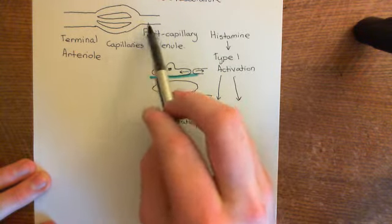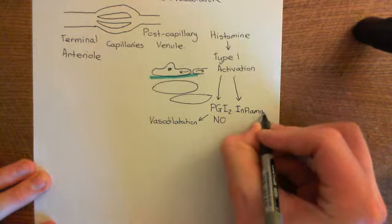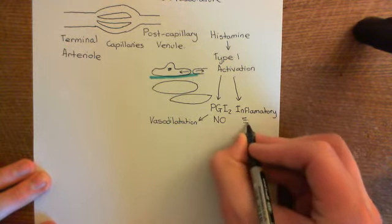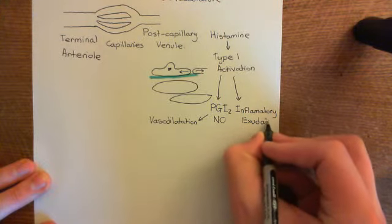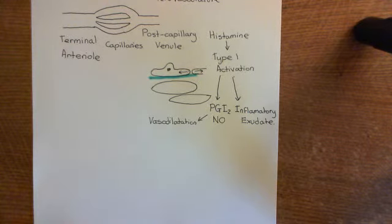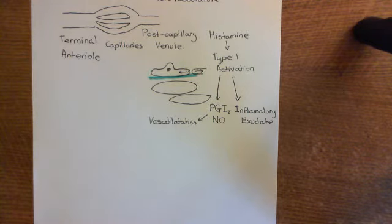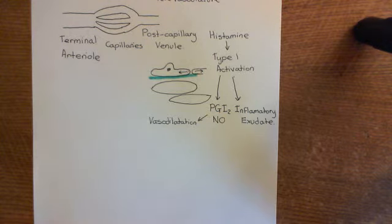This occurs at the capillaries and post-capillary venules, resulting in the formation of an inflammatory exudate — fluid from the blood leaving the blood and entering the interstitial space of the lamina propria. These holes are not big enough for cells, so red blood cells don't pour out, but they are big enough for proteins. Certain proteins circulating in the bloodstream in inactive forms move out through these gaps and are found within the inflammatory exudate.